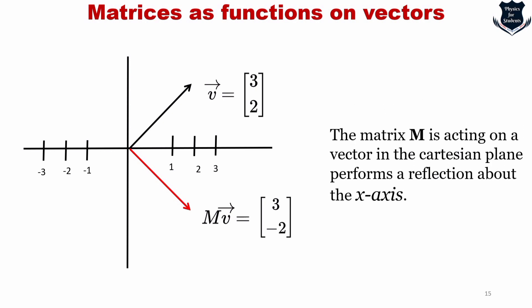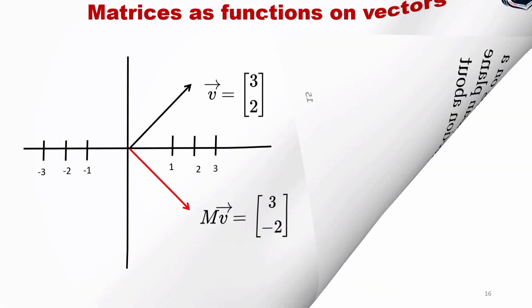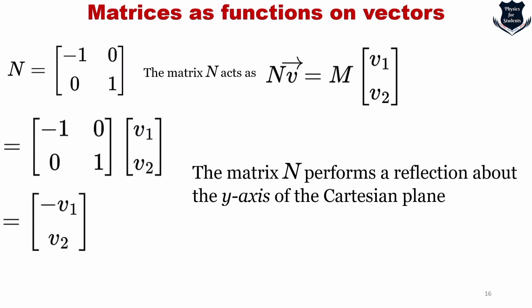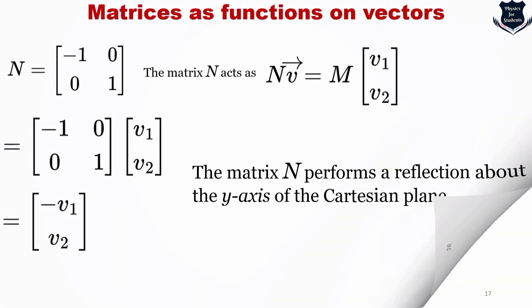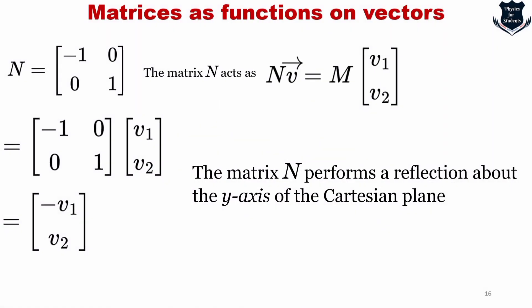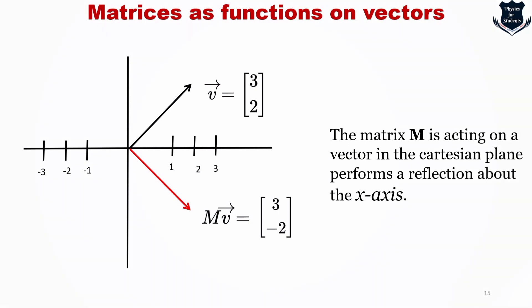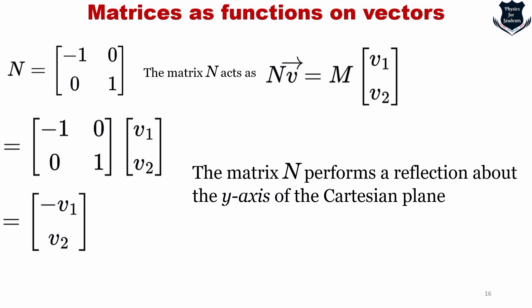There is another important observation. Another matrix M, defined as [-1, 0; 0, 1], performs a reflection about the y-axis on the Cartesian plane. When this M acts on vector [V1, V2], we get [-V1, V2]. So the sign of V1 is reversed while V2 remains positive, confirming reflection about the y-axis. This can also be shown visually. This is a very important property to understand.